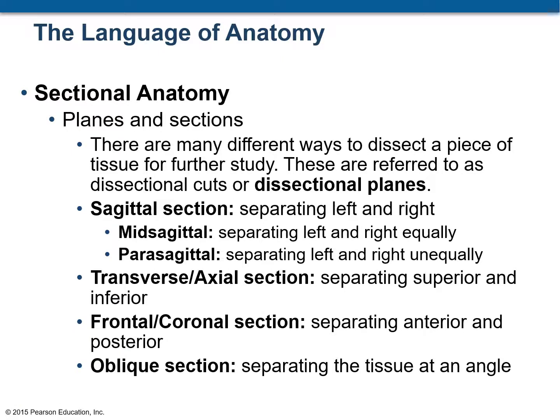Moving on to planes and sections of the human body, there are several ways in which a piece of tissue or the entire human body can be dissected, and these are known as dissectional planes or sections. The first one is a sagittal section — sagittal means the section separates the tissue or body into a left and a right part. There are two ways: mid-sagittal, where the section divides into equal left and right parts, and parasagittal, where it divides into two unequal parts — the section is either to the left or the right side.